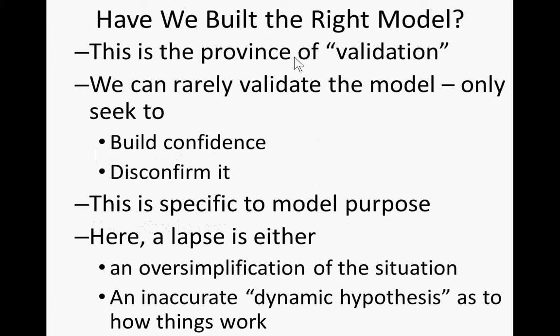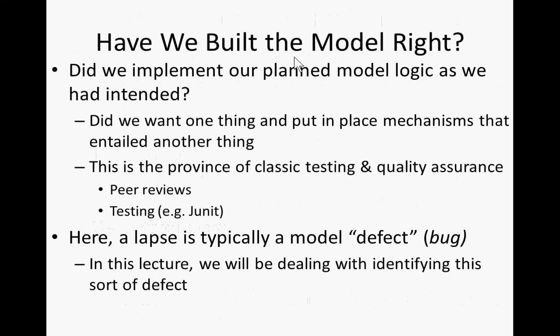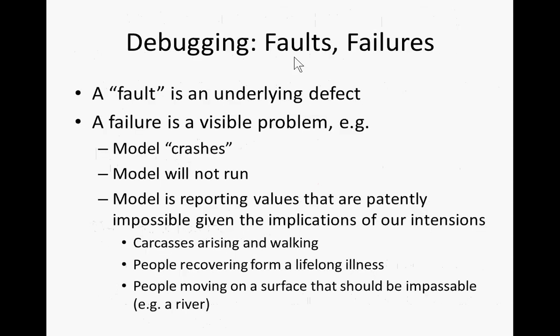Often a lapse here is either an oversimplification of the situation or an inaccurate dynamic hypothesis as to how things work. The question we want to focus on is: have we built the model right, and if not, how can we find the source of the problem? Do we implement our planned model logic as we intended, or did we put mechanisms in place that entailed something else — due to misunderstanding, sloppiness, or what have you? This is the province of classic testing and quality assurance within software. It's verification rather than validation. Peer reviews and testing come to the fore as key best practices, and a lapse here is typically a model defect or bug.